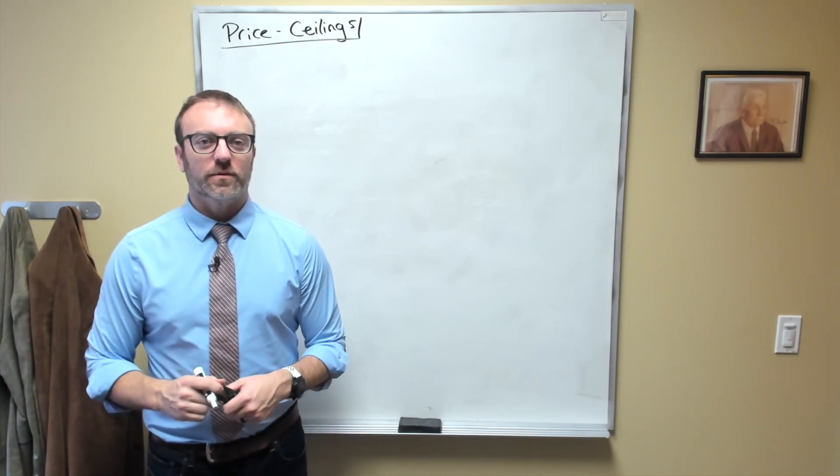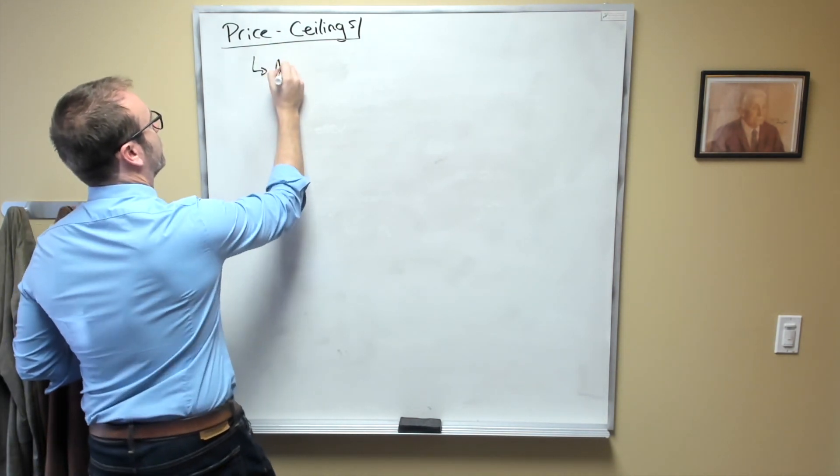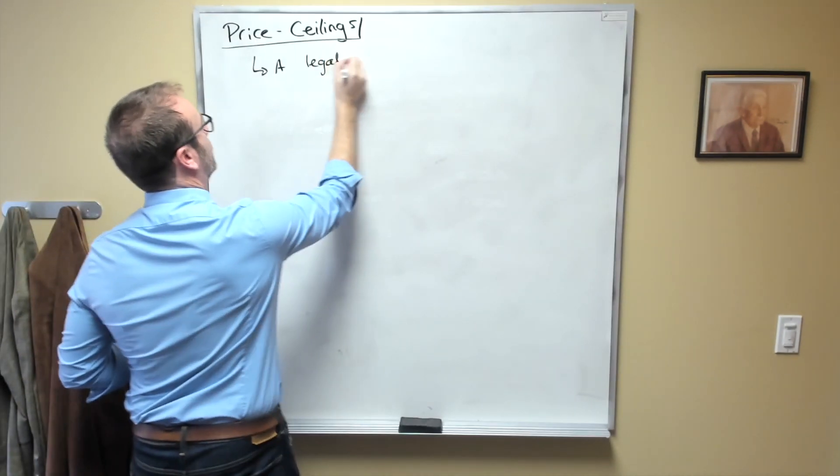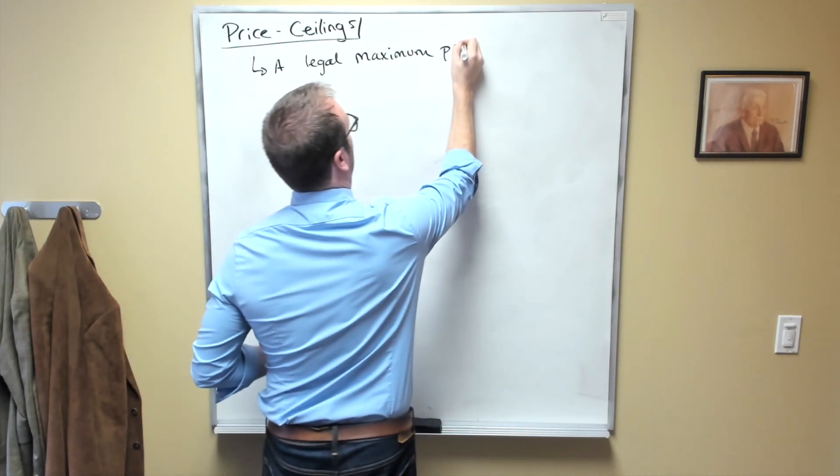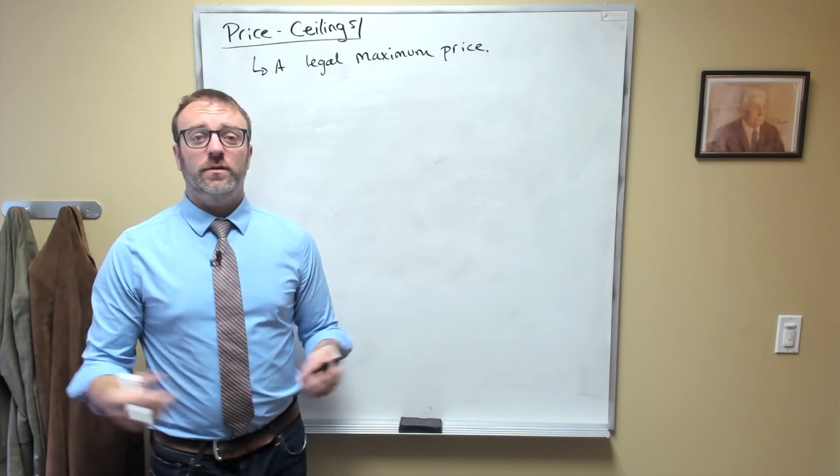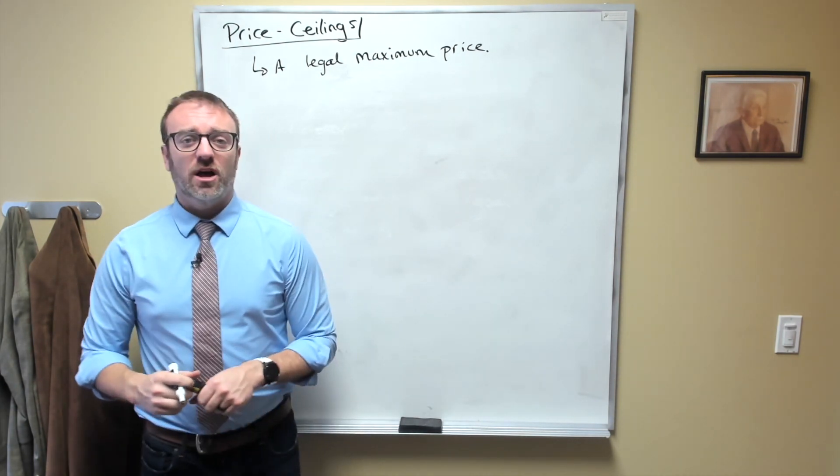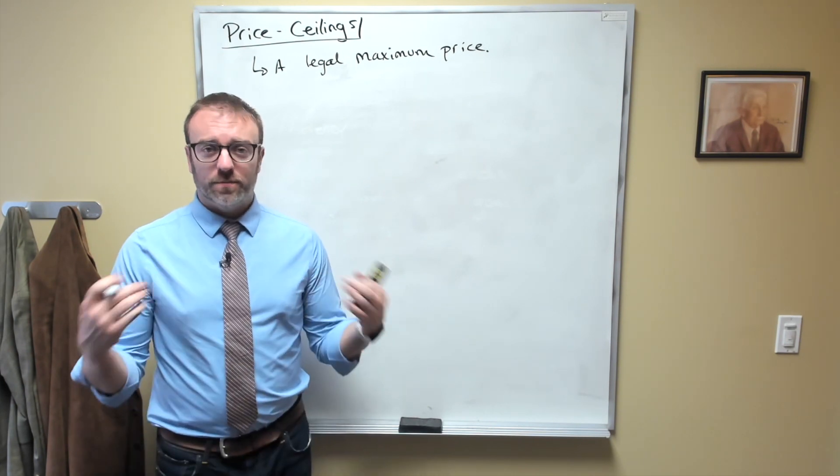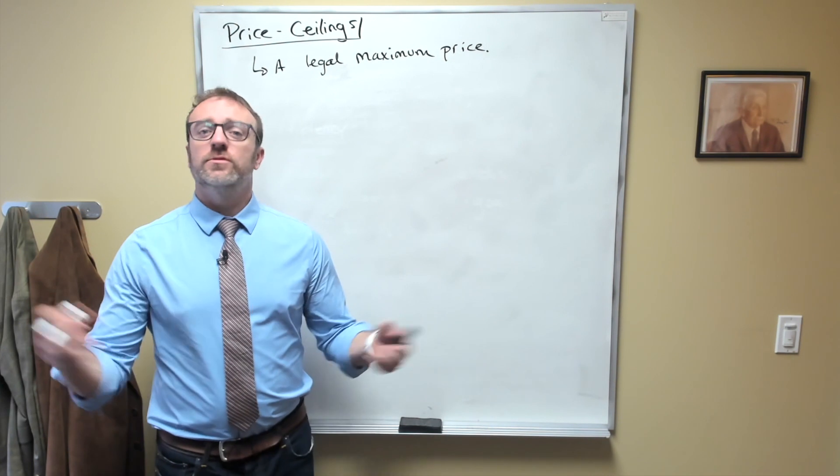Well, one thing that's been proposed is what we call a price ceiling. And a price ceiling is a legal maximum price. So if you don't like the price of something and think it's too high, there is absolutely nothing stopping us from signing a law that prevents the price from being too high. We could set the price of anything to anything we want.